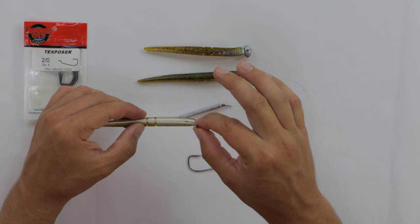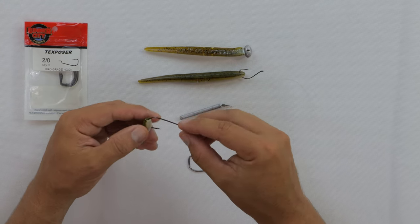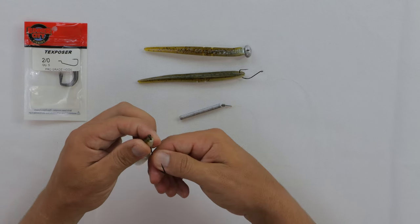Make sure that it comes out the center of the bait. Top-down view. Make sure it comes out the center. You don't want it coming out the sides.